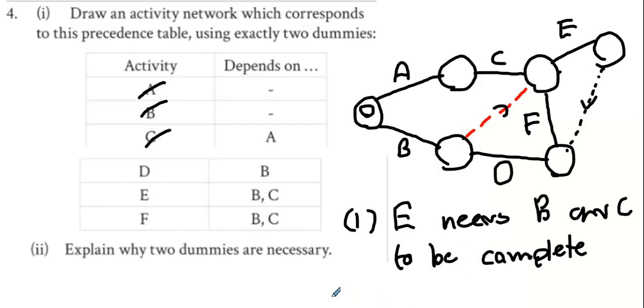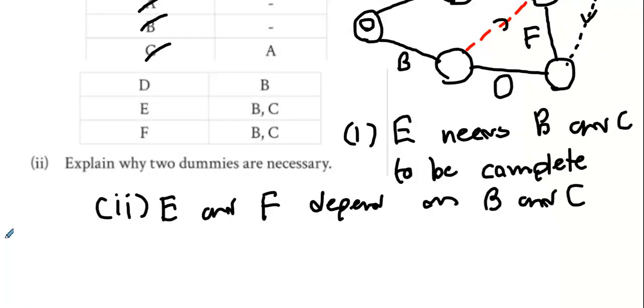And what's the second reason for the dotted black line? What do E and F have in common? E and F depend on B and C, and B and C must finish in the sink.